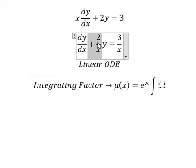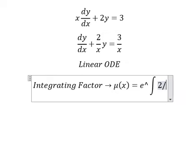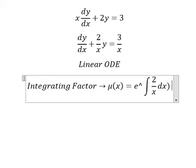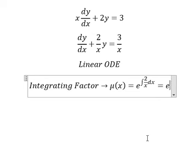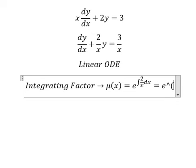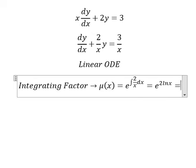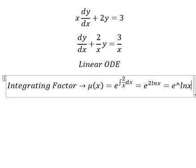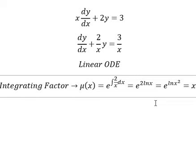We can see the integrating factor is 2 over x. We have 2 times the natural log of x, so number 2 goes inside the natural log and we have x squared.